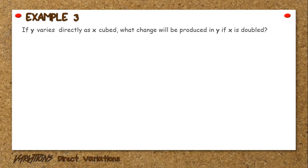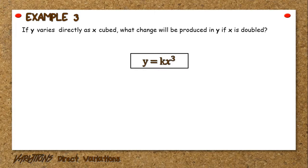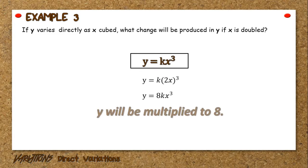Example 3: If y varies directly as x cubed, what change will be produced in y if x is doubled? Identify the mathematical equation, which is y equals k times x cubed. Since x is doubled, multiply x by 2 and then simplify, which will result in y equals 8k times x cubed. Since the proportionality constant will be multiplied by 8, y will also be multiplied by 8.